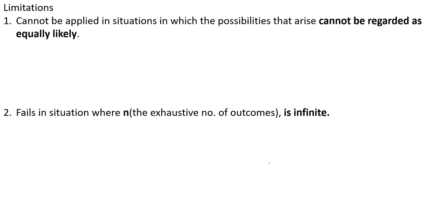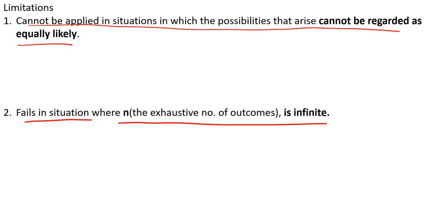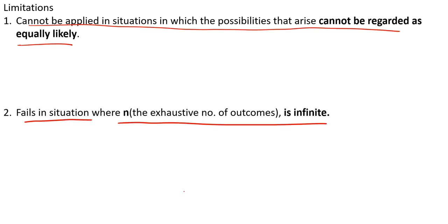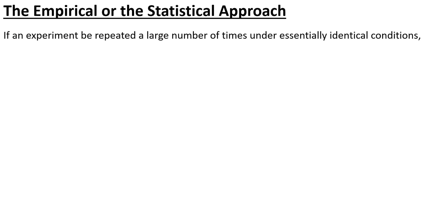This was the classical definition of probability, but it has some limitations. First, it cannot be applied in situations where outcomes cannot be regarded as equally likely — we can only use it for equally likely outcomes like a coin toss or die throw. For example, we cannot use it to tell whether it will rain today. Second, it fails in situations where n is infinite — if there are infinitely many outcomes, we cannot determine a probability this way.